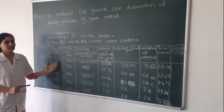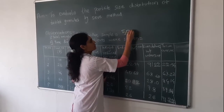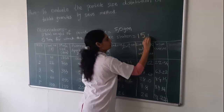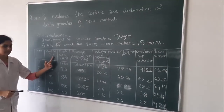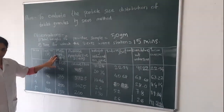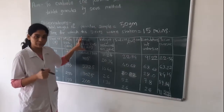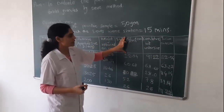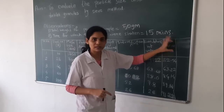Now we write the observations. The total weight of powder sample taken was 50 grams, and the time for which the sieves were shaken was 15 minutes. The observation table consists of: serial number, sieve number, mesh size (size of one perforation), aperture size (size of each opening), weight retained on each sieve, percent weight retained, percent cumulative weight oversize, and percent cumulative weight undersize.